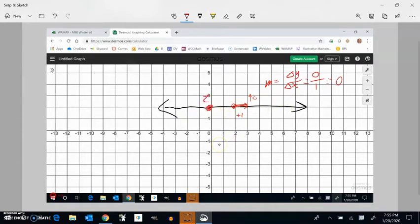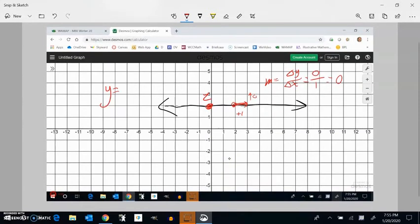And my y-intercept is 2. So if I wanted to write an equation for this, I could say y equals, I could say 0x plus 2. But 0x is always 0. I could just say y equals 2. And notice that y is like the height. Y is always 2. That's why it's always at this height of 2 no matter what x value you have. When x is 6, y is 2. When x is 3, y is 2. When x is negative 1, y is 2. Y is always equal to 2.